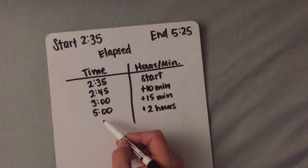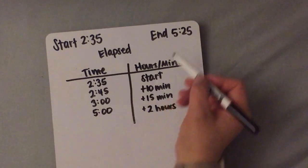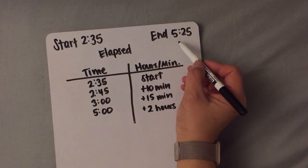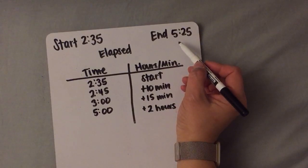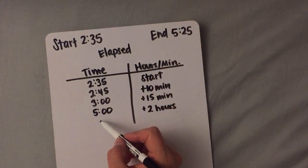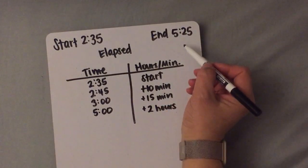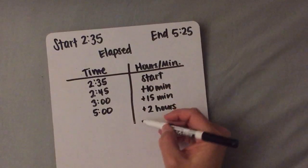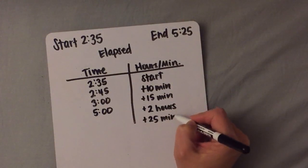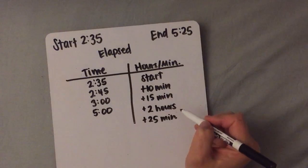Now that I'm at 5 o'clock, I'm only 25 minutes away from my end time of 5:25. To go from 5:00 to 5:25, I just need to add 25 minutes.